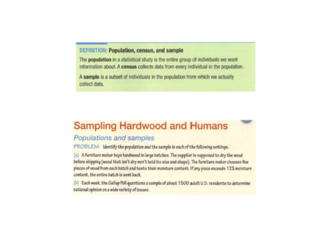Starting with population: a population is the entire group of individuals that we want information about. Maybe we want information about college sophomores in the U.S. — if we wanted to talk to that population, we'd have to talk to every college sophomore in the United States. That would be the population.